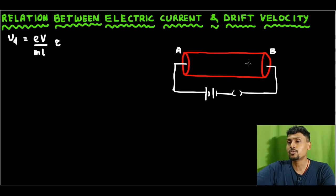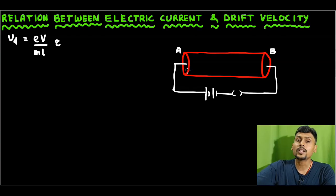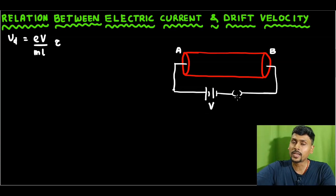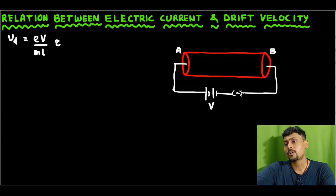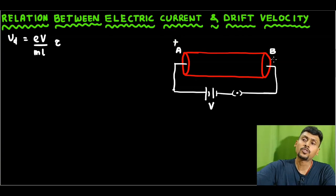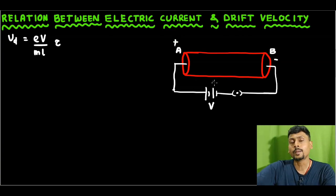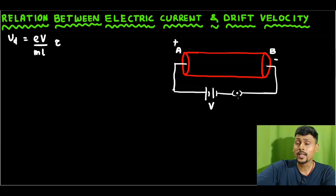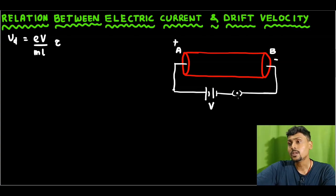You can see that A-B is a conductor of cylindrical shape, and this conductor is connected to a battery of potential difference V volts, with a switch. When you turn on and close the switch, we know that the free electrons inside the conductor will start drifting from the low potential end to the high potential end.